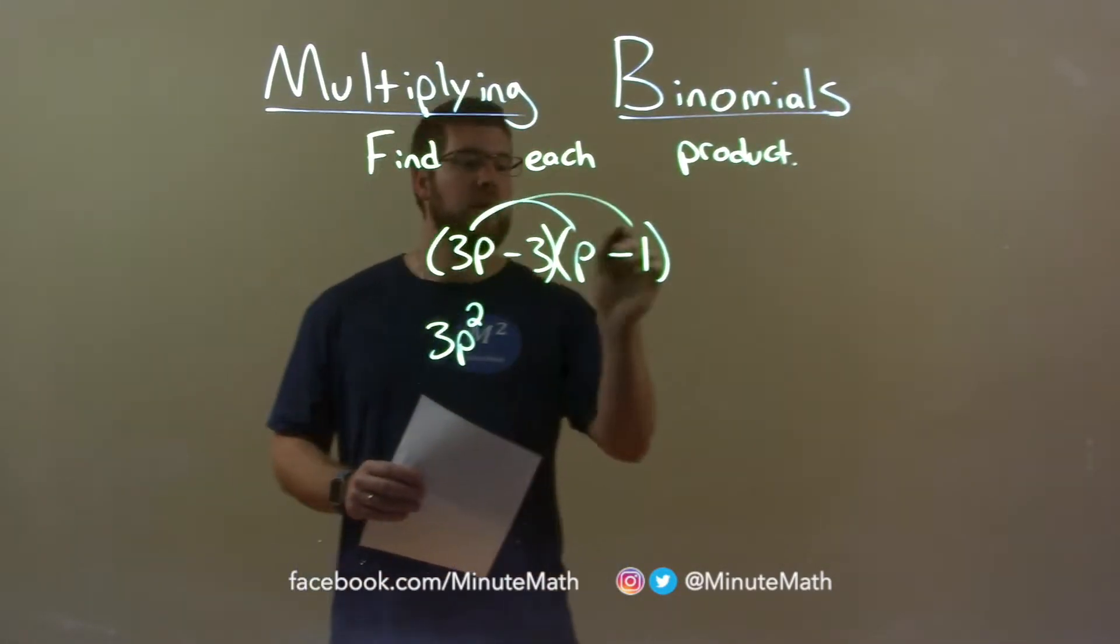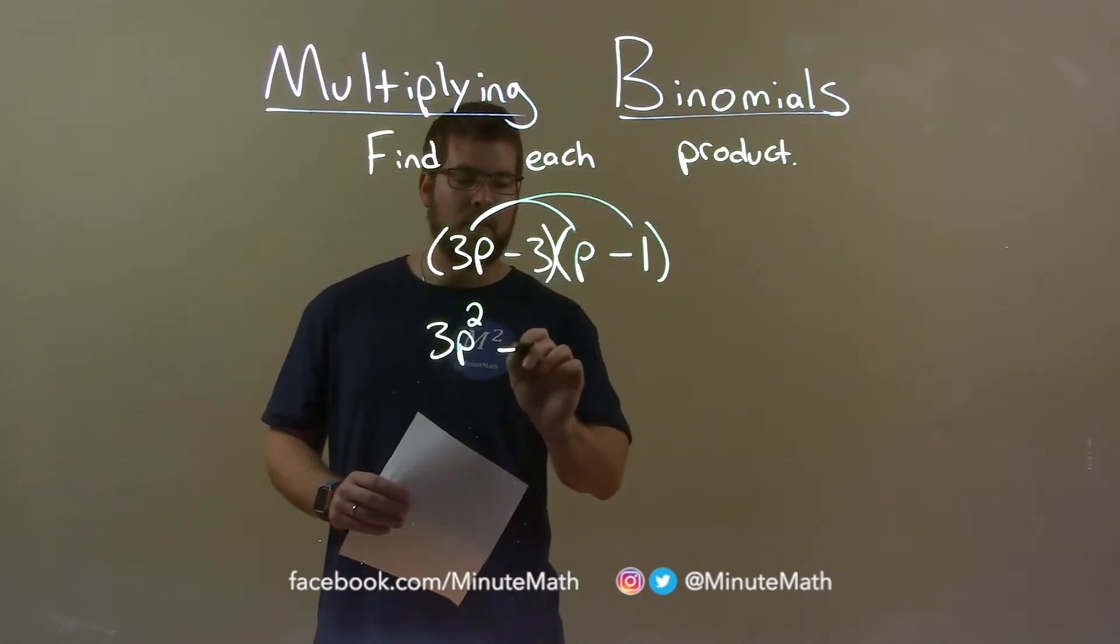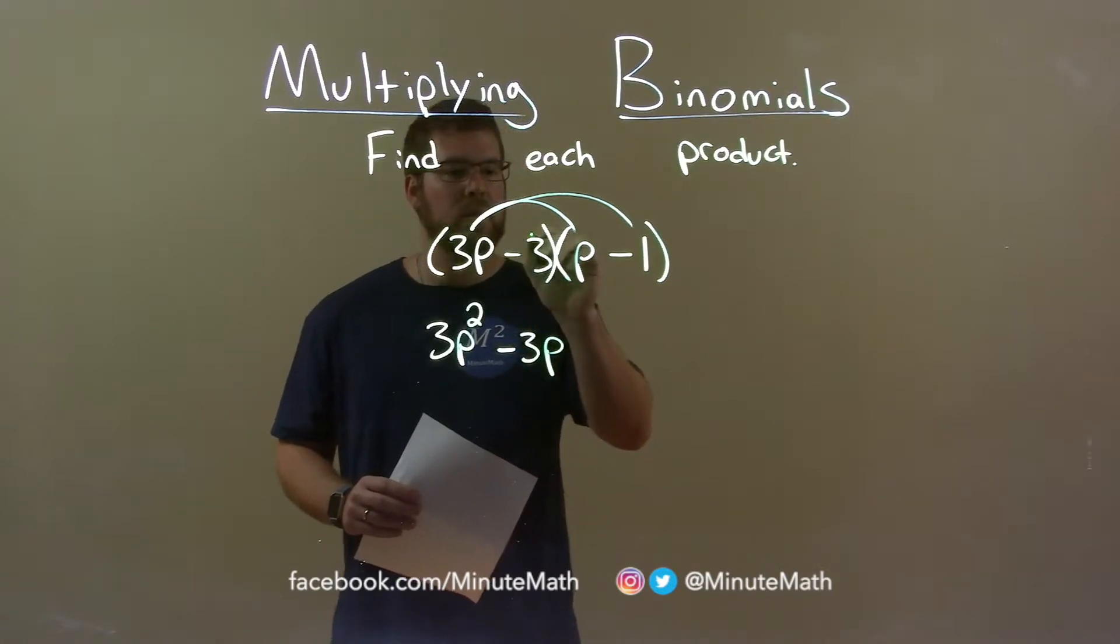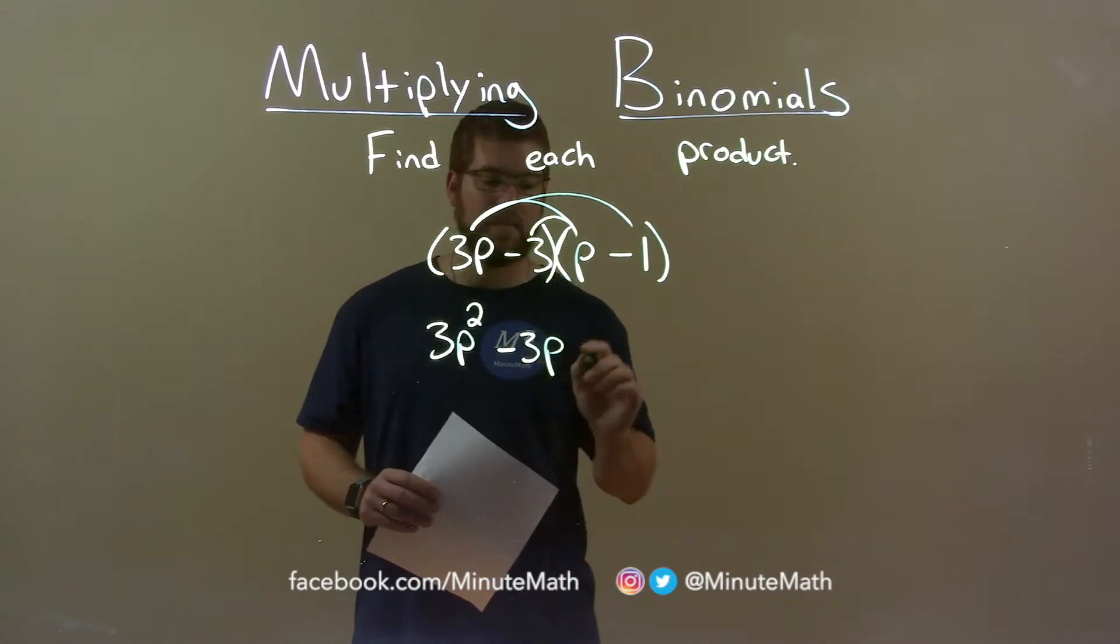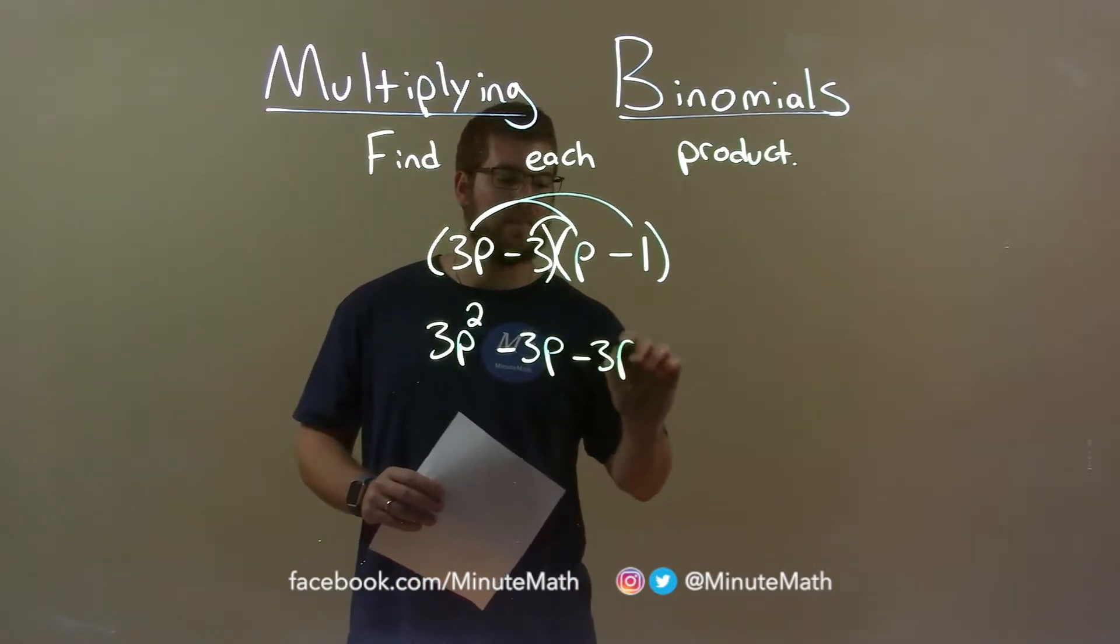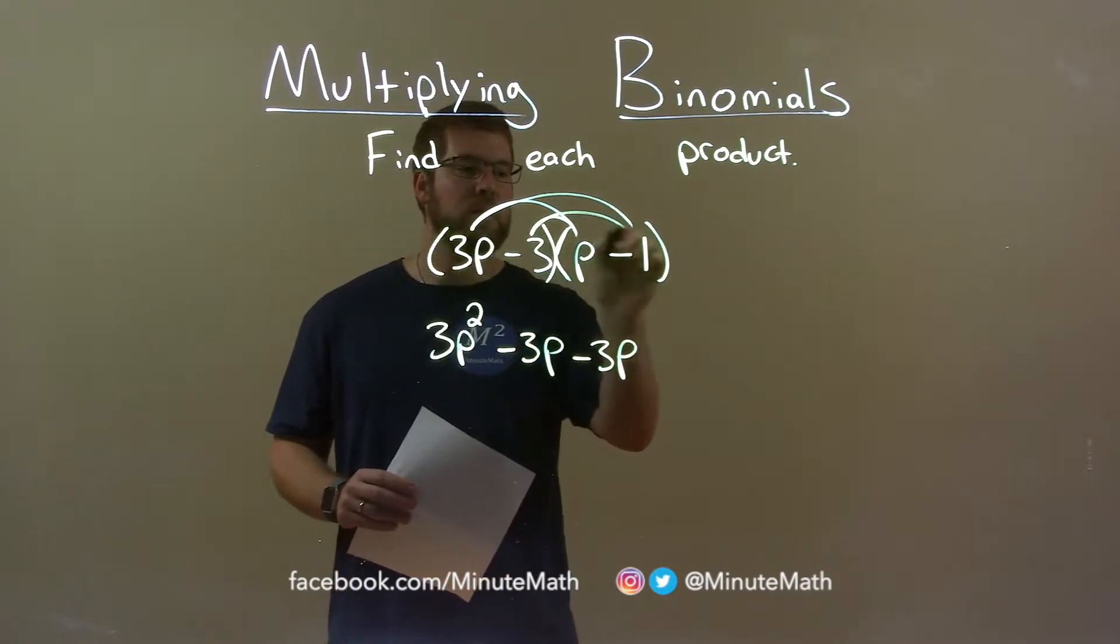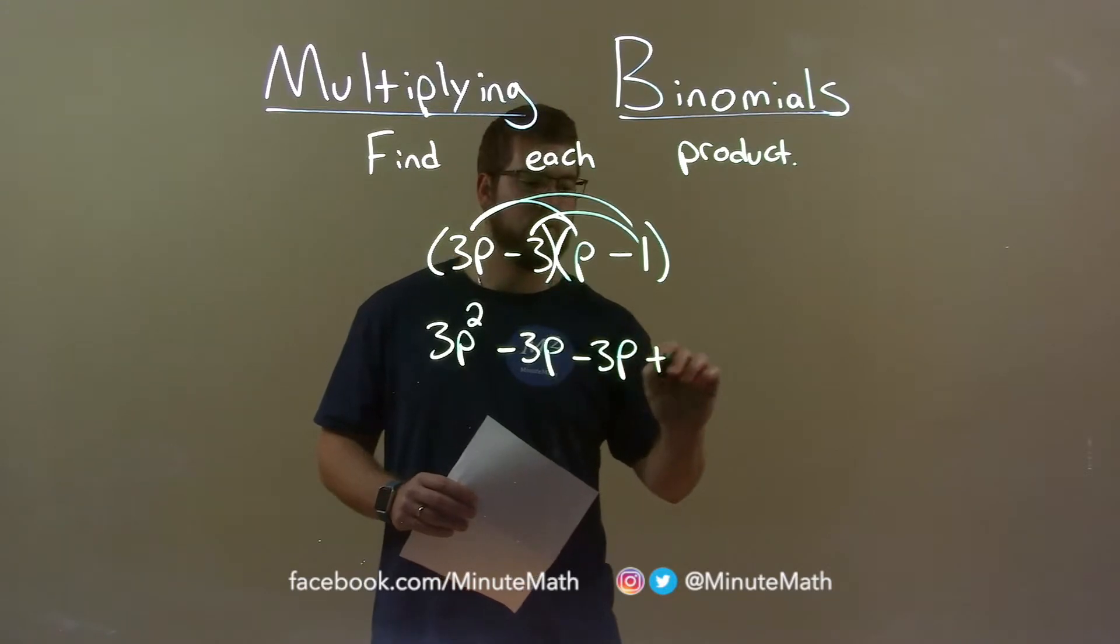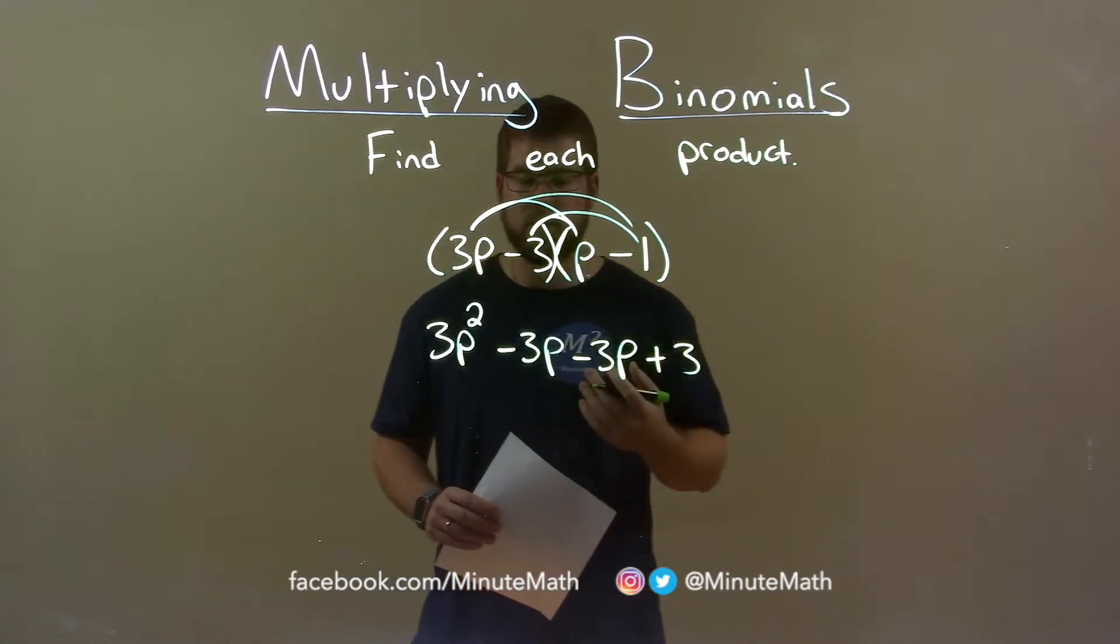3p then gets multiplied by minus 1, which makes minus 3p. Minus 3 now gets multiplied by p, which is minus 3p again. And minus 3 times minus 1 is positive 3. Remember, a negative times a negative is a positive.